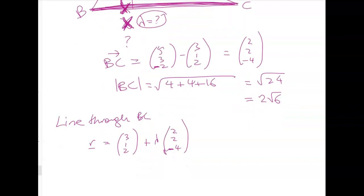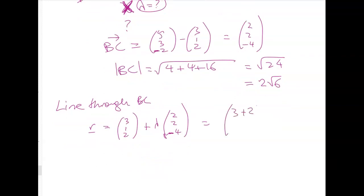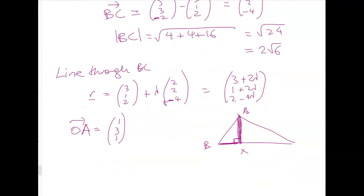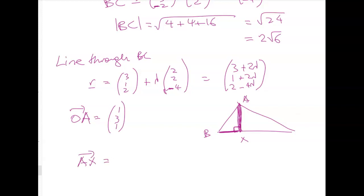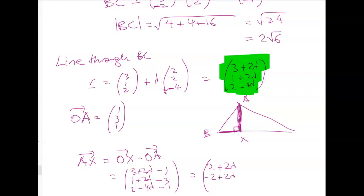Now we know that X is on that line. So we're just writing that now as 3 plus 2 lambda, 1 plus 2 lambda, 2 minus 4 lambda. And we know that OA is equal to 1, 3, 1. So that means that, just drawing this in again, here's 1 again. Here's X, and here's A, and here's B. So we know that at point X, we must have that the angle here is 0. Let's work out what AX is. Well, AX goes from A to X. So it's OX minus OA, which is 3 plus 2 lambda, 1 plus 2 lambda, 2 minus 4 lambda minus 1, minus 3, minus 1. So the vector from A to X is 2 plus 2 lambda, negative 2 plus 2 lambda, and 1 minus 4 lambda.